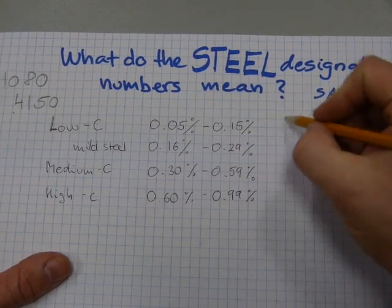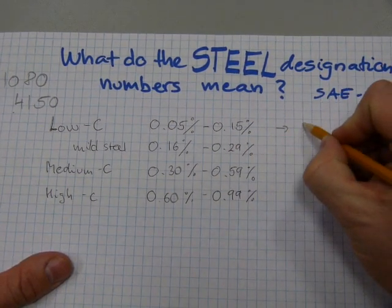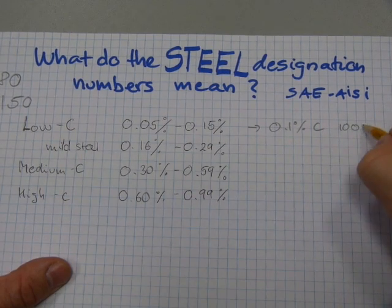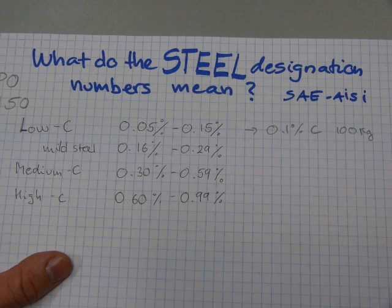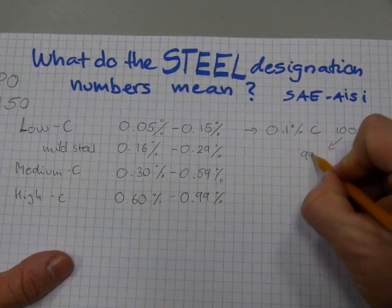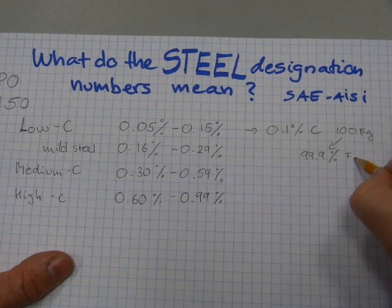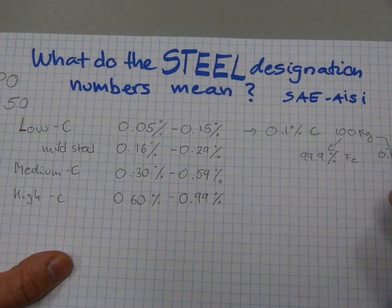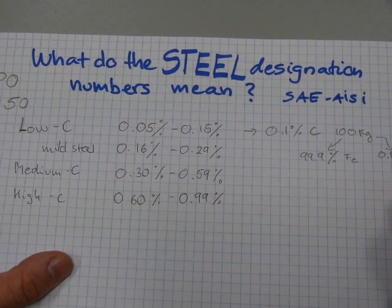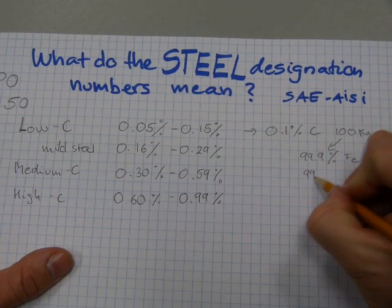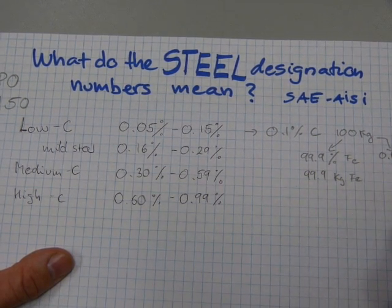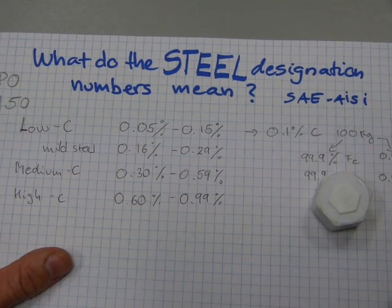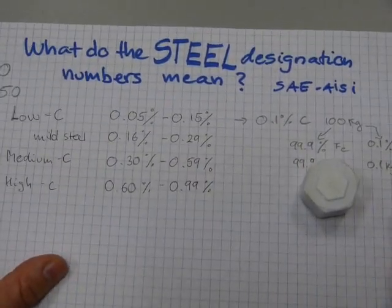Now if a steel for example contains 0.1 percent carbon, what this means is that out of a hundred kilograms of finished steel product, 99.9 percent is iron and 0.1 percent is carbon. And it also means at the same time that 99.9 kilograms is iron and 0.1 kilogram is carbon. This is the same as 100 grams.